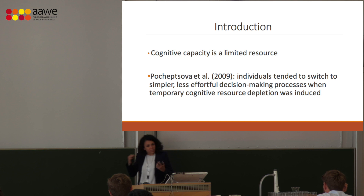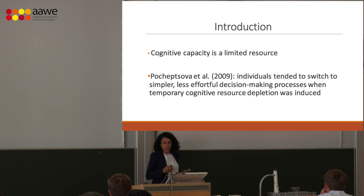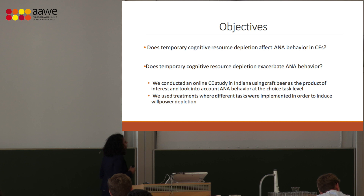We might not look at all the attributes of a product because it takes cognitive effort to make that choice. Psychologists tell us that cognitive capacity is a limited resource, and when we are under cognitive load — when we use a lot of our mental resources — we tend to make simpler choices and use less-effort decision-making processes. So our question in this research is: does temporary cognitive resource depletion affect marginal willingness to pay estimates?